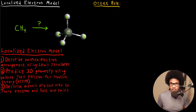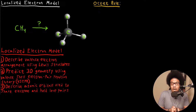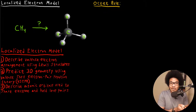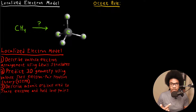There are really three components to the localized electron model. The first one is to describe the valence electron arrangement using a Lewis structure. Based on the composition of your molecule, there will be a certain amount of valence electrons involved in the bonding. Valence electrons are the ones involved in bonding, so the first piece is knowing how many valence electrons are involved and what their arrangement is in the molecular framework.